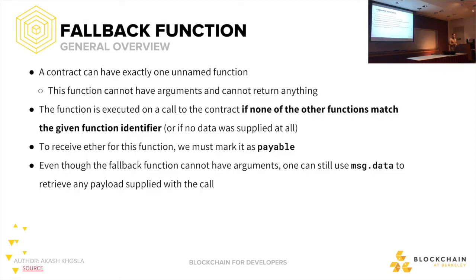That leads to the fallback function. Basically there's an unnamed function in a contract — a contract can have exactly one — and this function cannot have arguments and can't return anything. This function executes on a call to the contract if none of the other functions match the given function identifier. So if you call some gibberish function identifier, this is what it falls back on. Or if no data was supplied at all, it also falls back to this. Anything that's an invalid function identifier falls back.